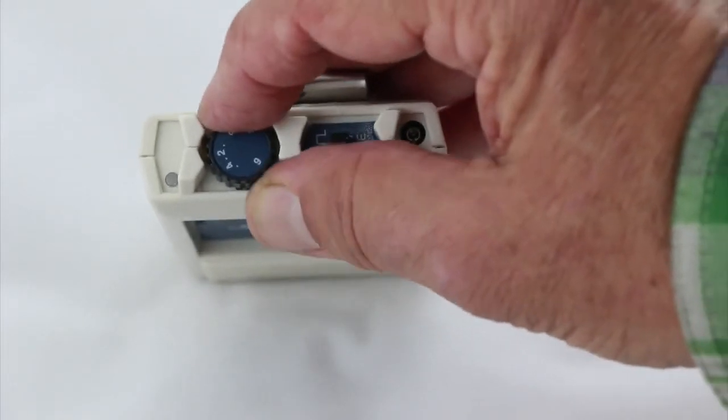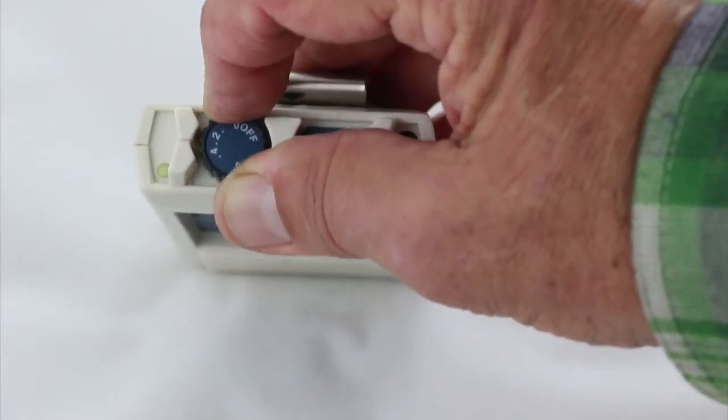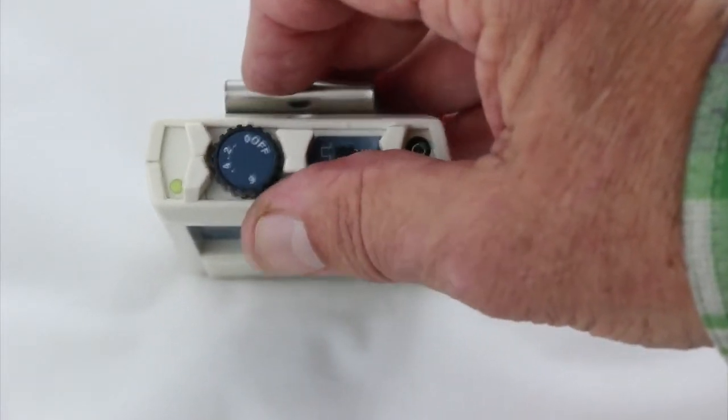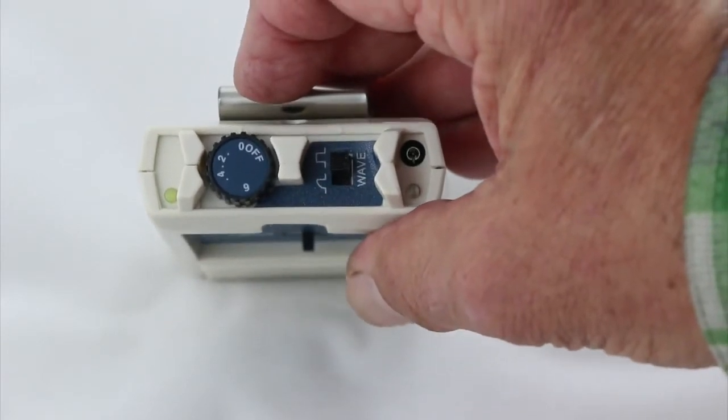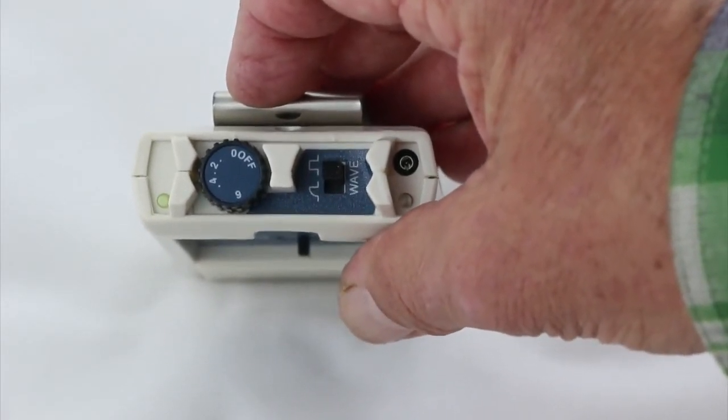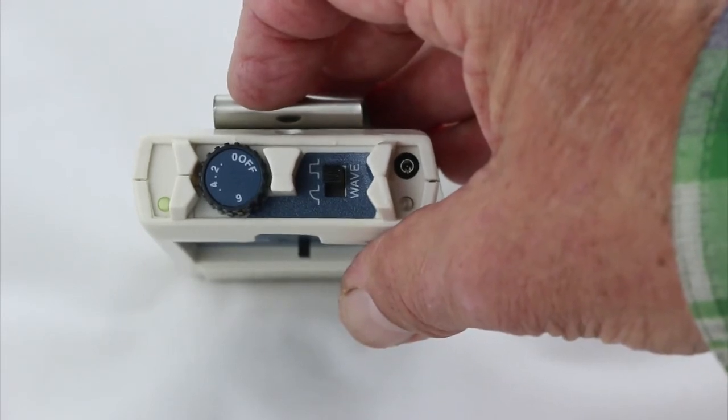As you turn this clockwise or counterclockwise, you're either turning up the power or turning it off. Clockwise turns it up. Counterclockwise reduces the current and then turns it off.